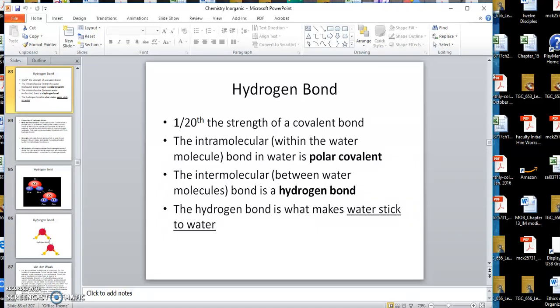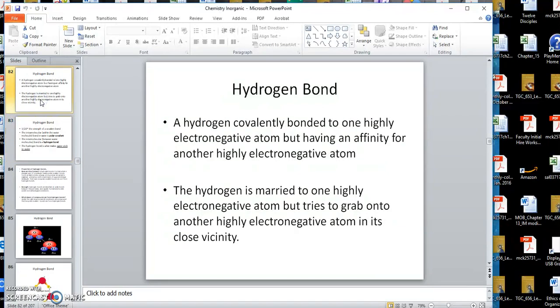Okay, we're ready to talk about the hydrogen bond. The hydrogen bond occurs primarily when you have a hydrogen covalently bonded to one highly electronegative atom, like oxygen, doesn't have to be oxygen, but having an affinity for another one, and that hydrogen would like to join with the other molecule. That's what we call a hydrogen bond.